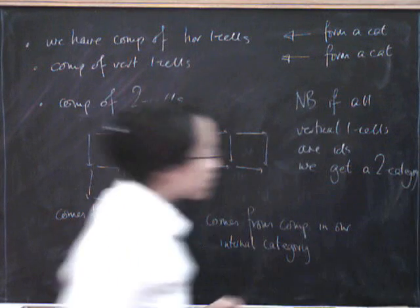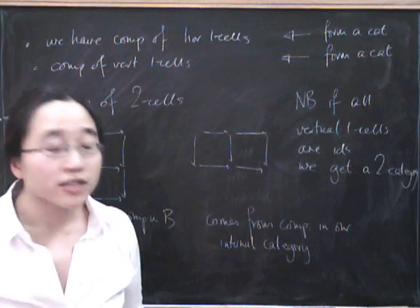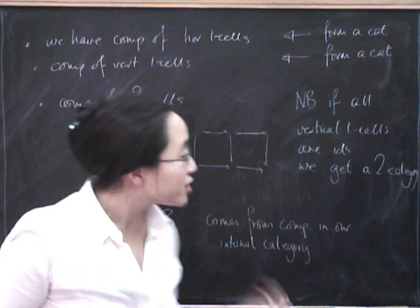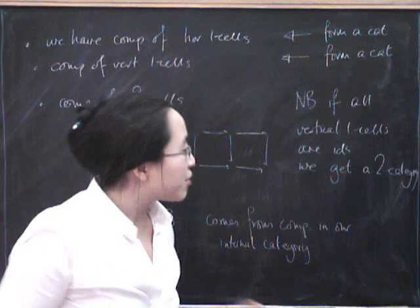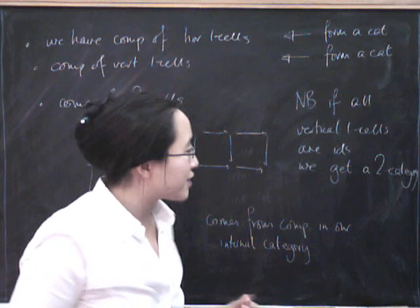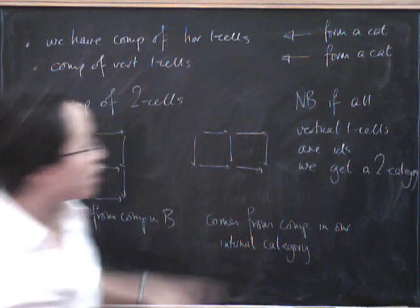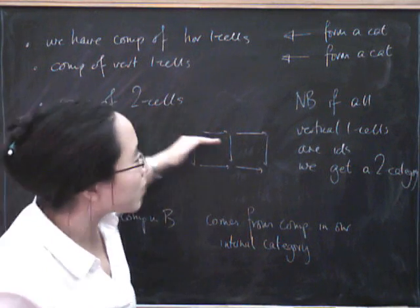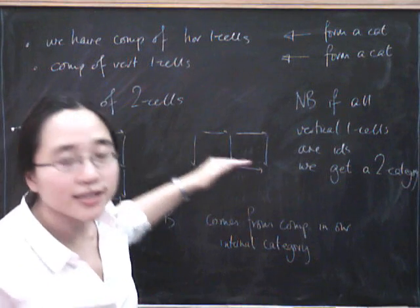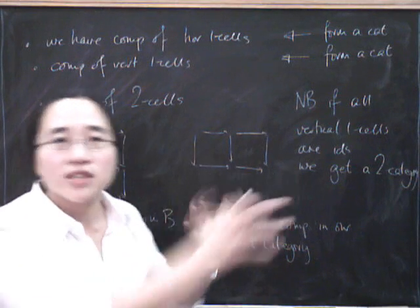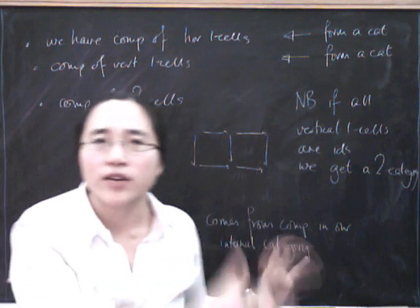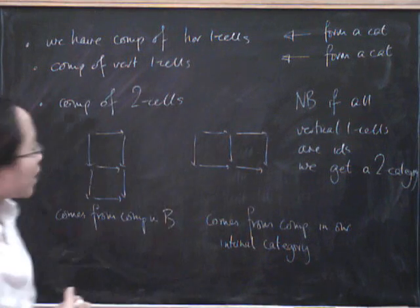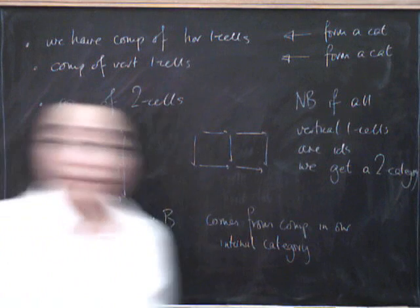It turns out that the notion of a two category and the notion of a double category are closely related, but they're not exactly the same. Of course, if you had all your horizontal one cells being identities, you'd symmetrically also get a two category. And that's all I'm going to say about that for today.